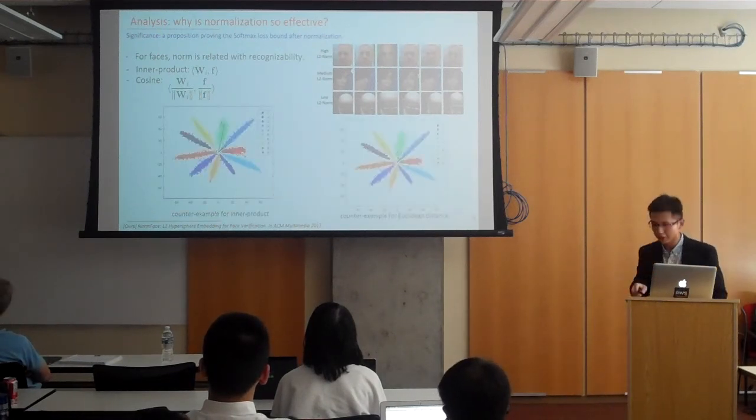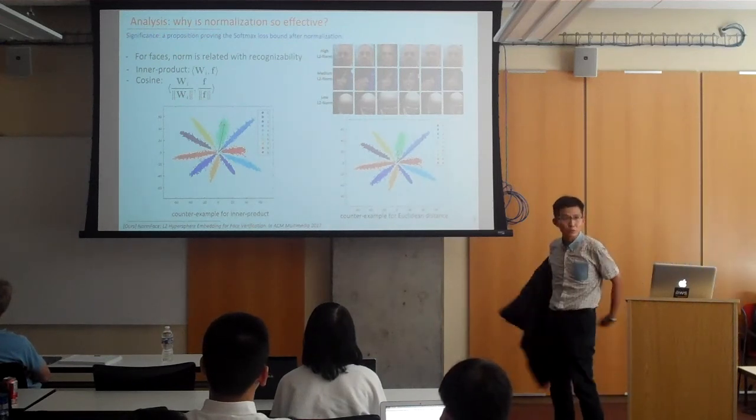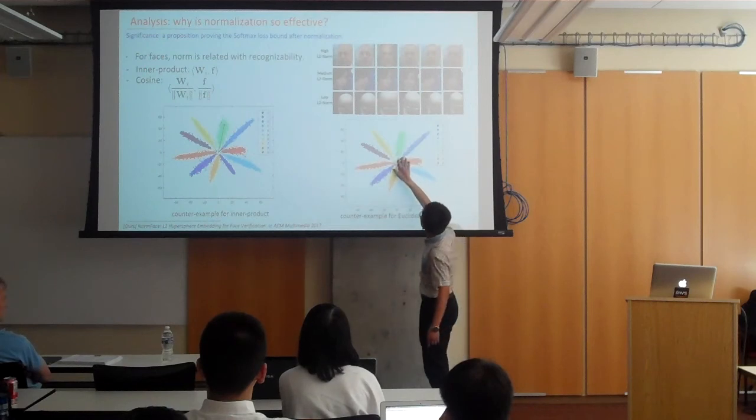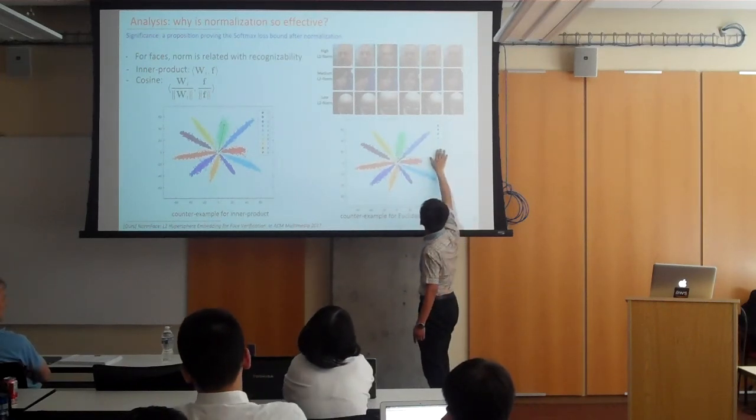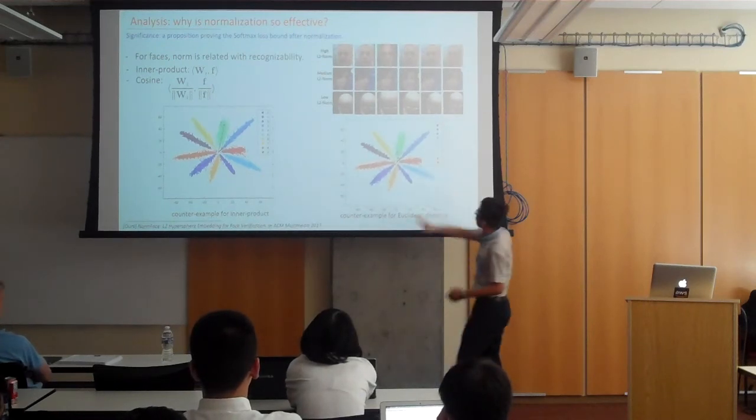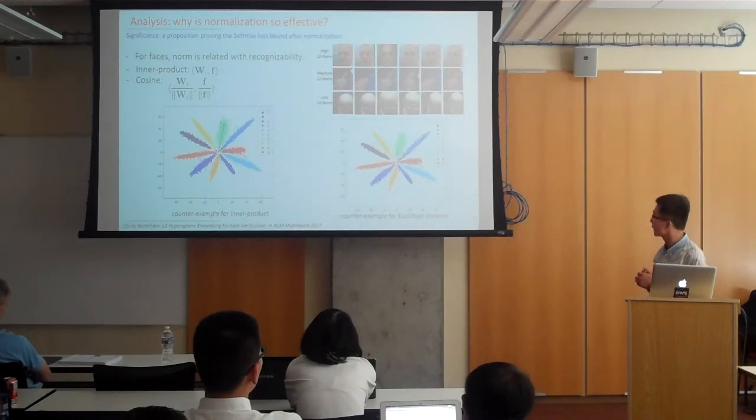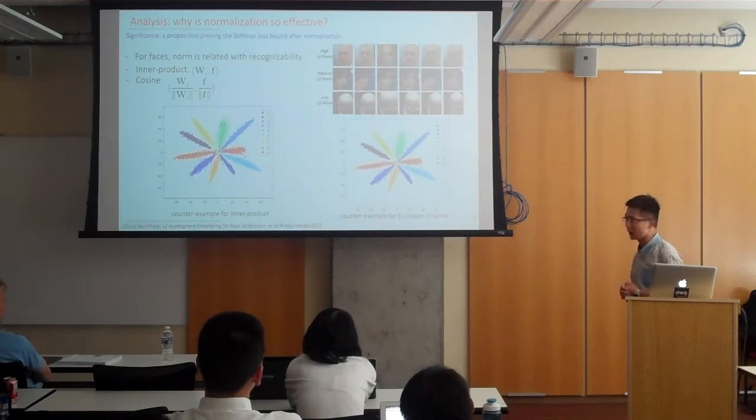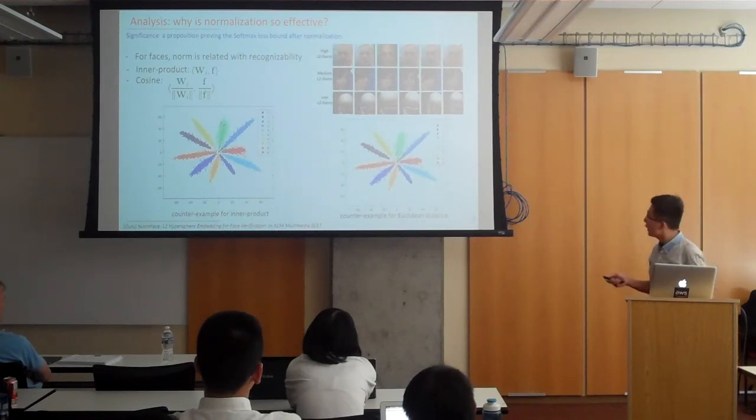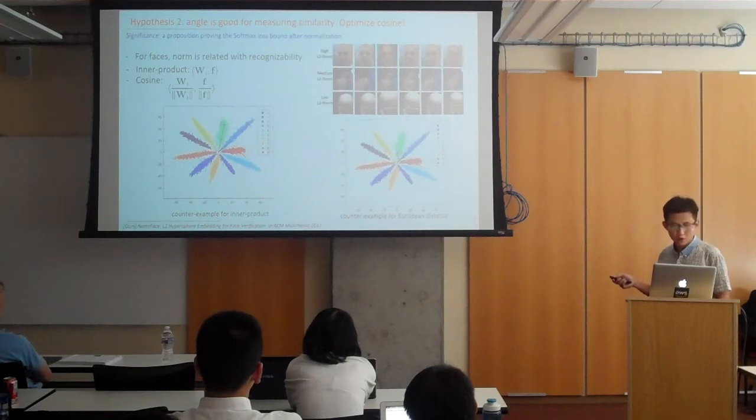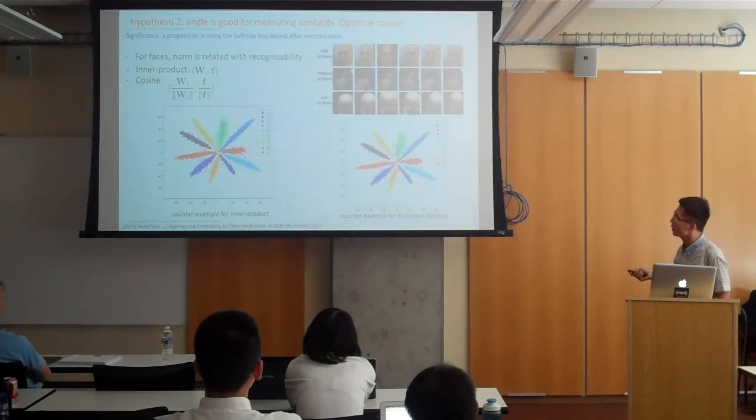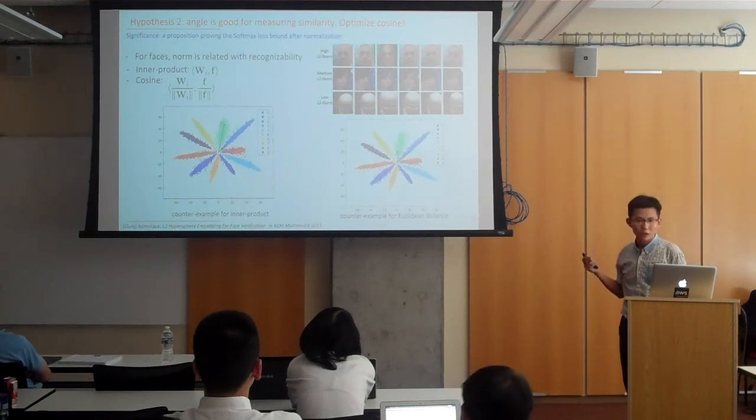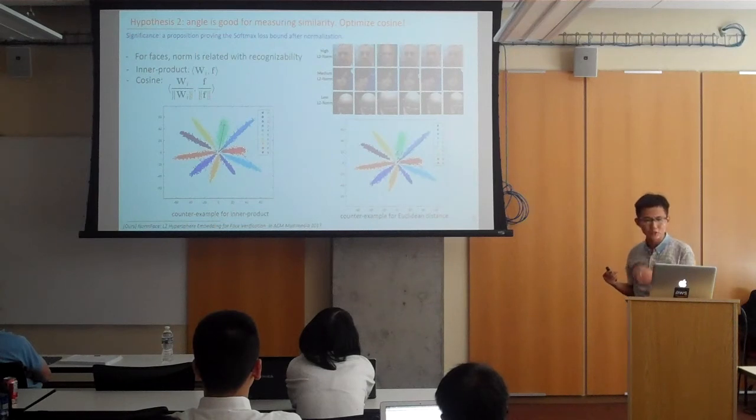Here's another kind of example for euclidean distance. Basically, once again, we want to minimize the euclidean distance. But in this case, F1 and F2 belong to a different class, but their euclidean distance is small. Basically, I guess this is for class 5. F2 is a sample from class 3. F1 and F2 are very close. They have a very small euclidean distance, but they belong to a different class. Instead, F2 and F3 belong to the same class, but their euclidean distance is large. As a result, we think cosine is a good similarity metric for face classification. So if we use the unnormalized feature, we should optimize the cosine. We propose a proposition keeping the softmax loss bound after normalization. The corresponding paper has gotten 20 citations within a year.